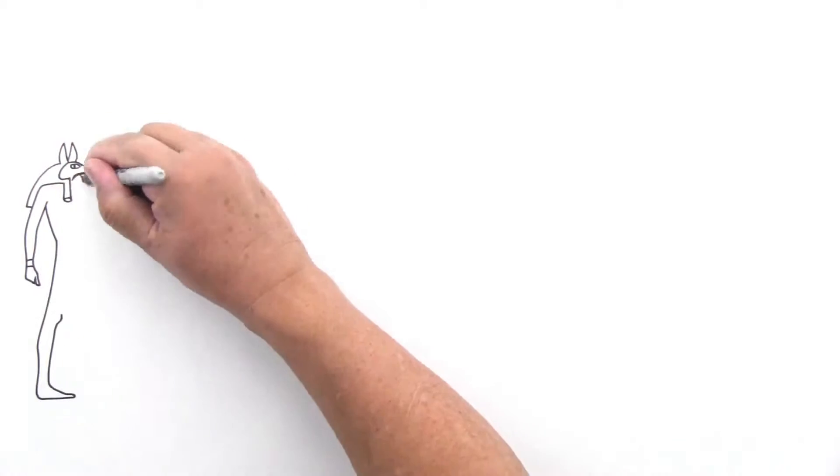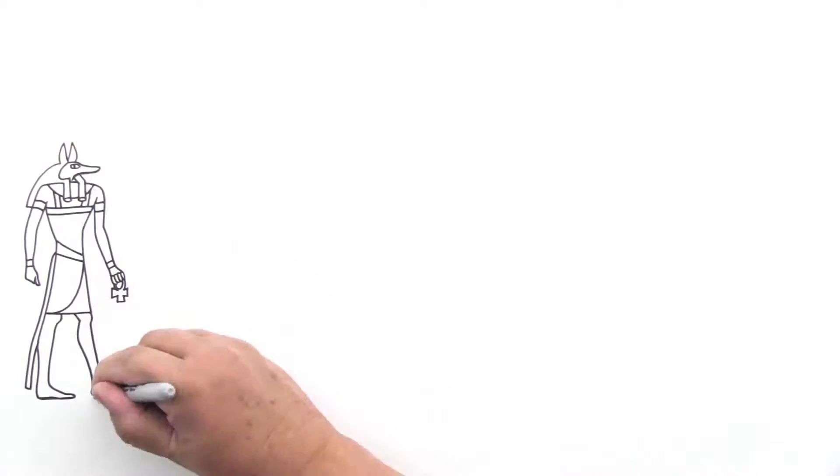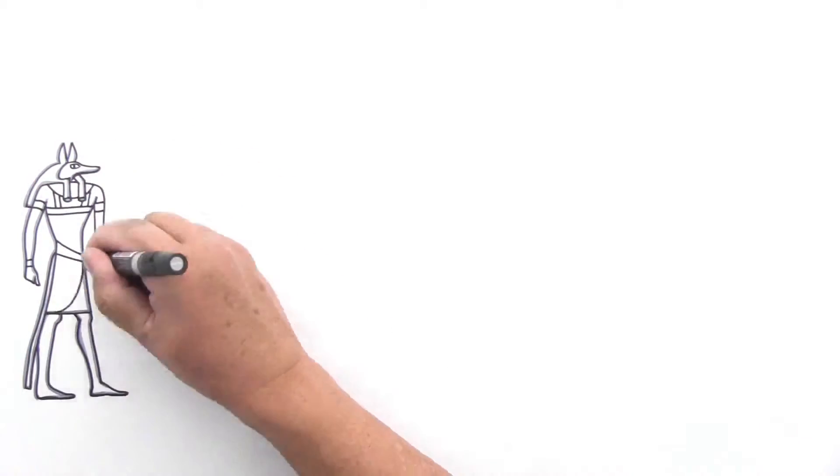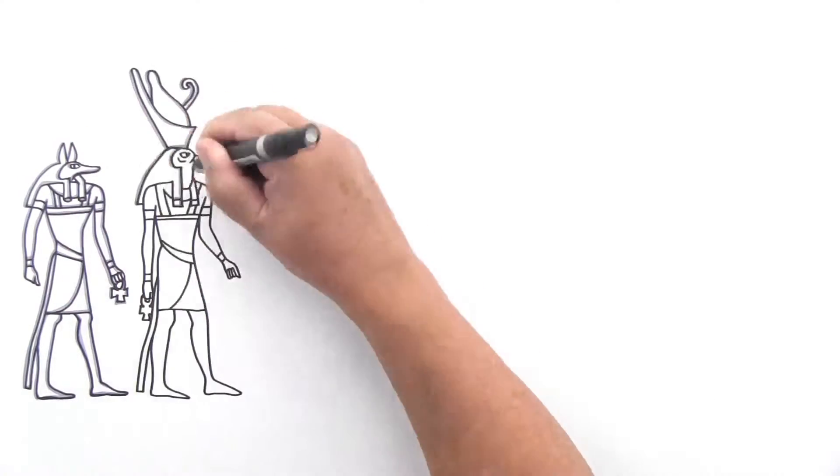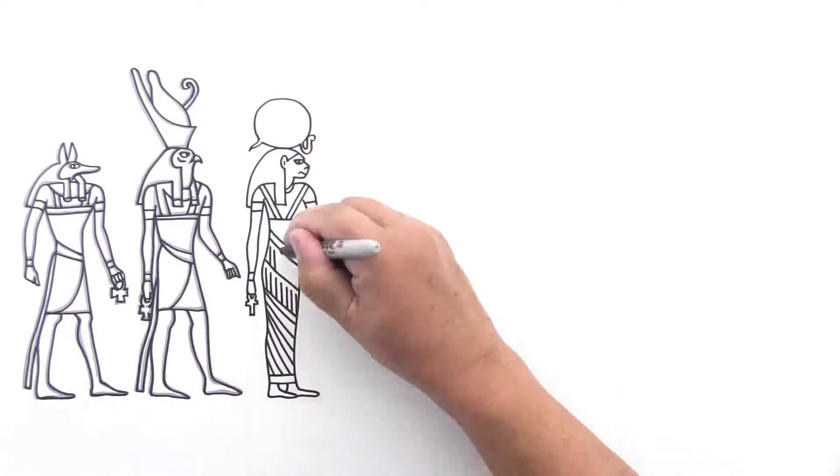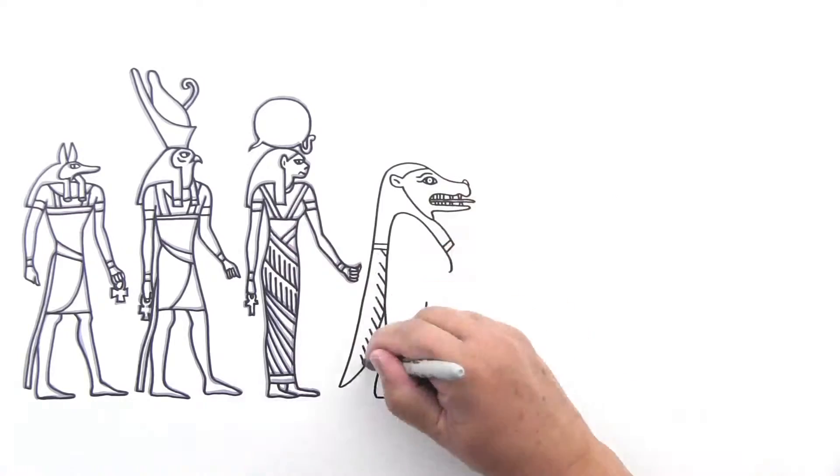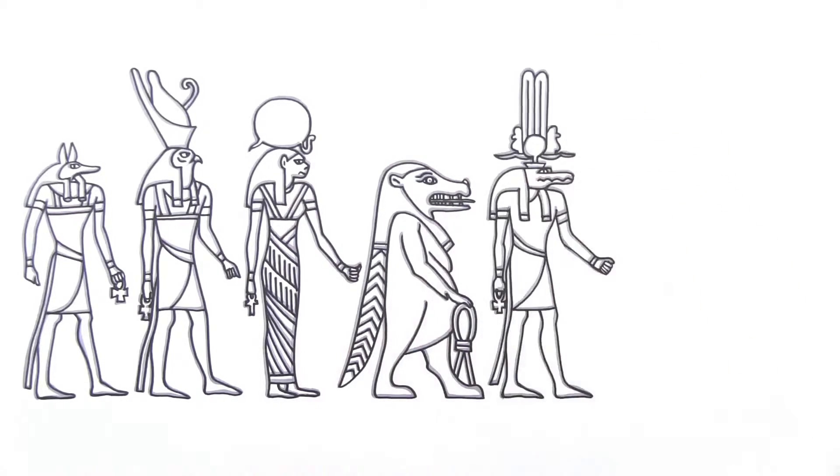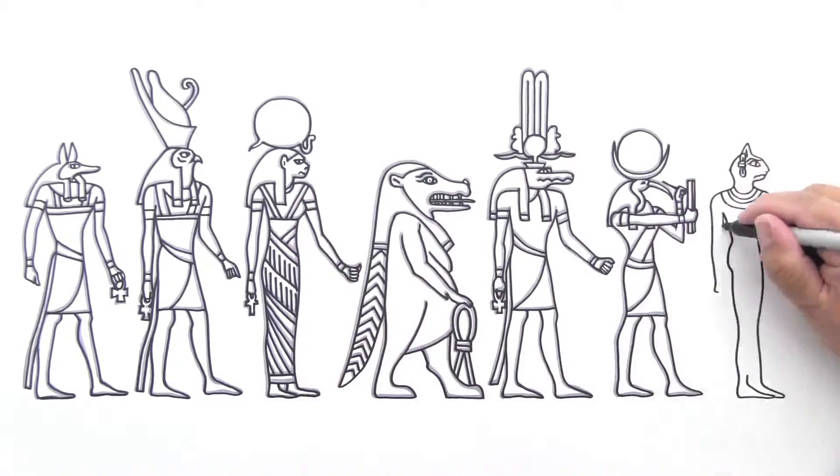That doesn't mean Egyptians weren't creative. Just look at their pantheon of gods. They imagined jackal-headed gods, and hawk-headed gods, lion-headed goddesses, rawr, hippo-headed goddesses, oh my, crocodile-headed gods, and ibis-headed gods, cat-headed gods, and, well, you get the picture.